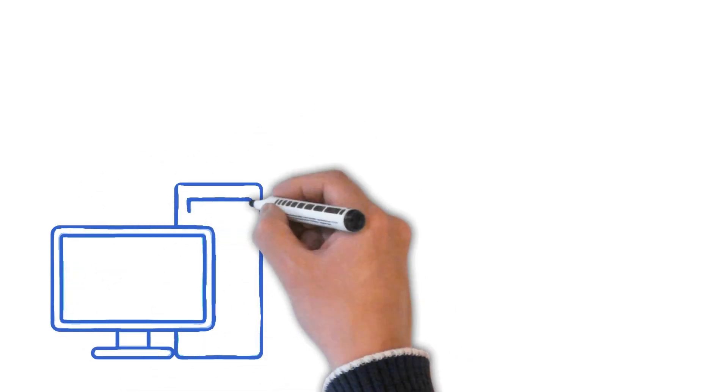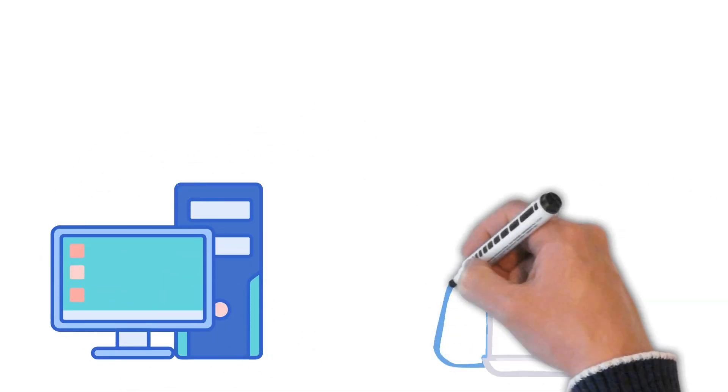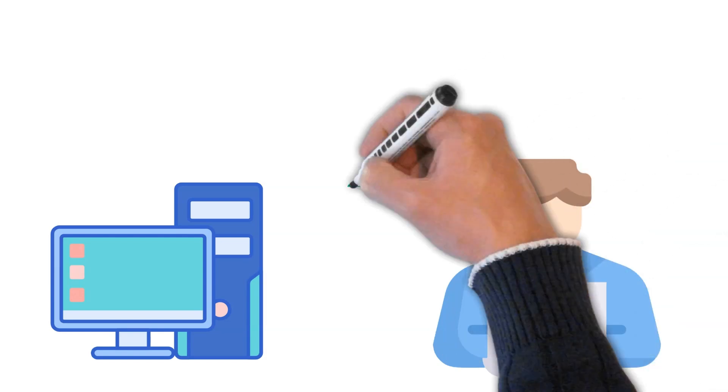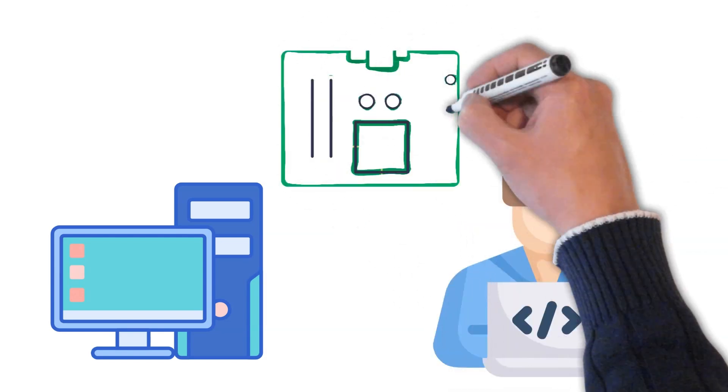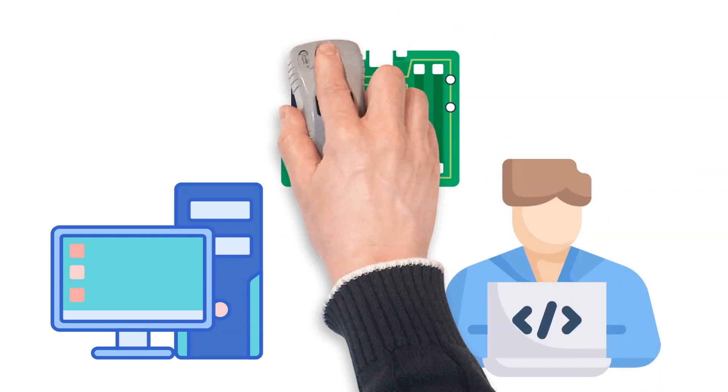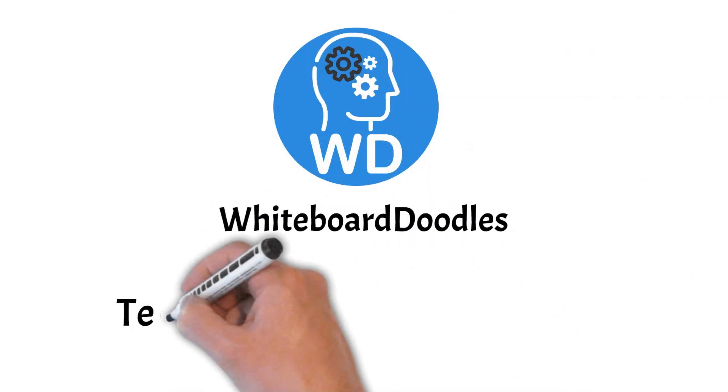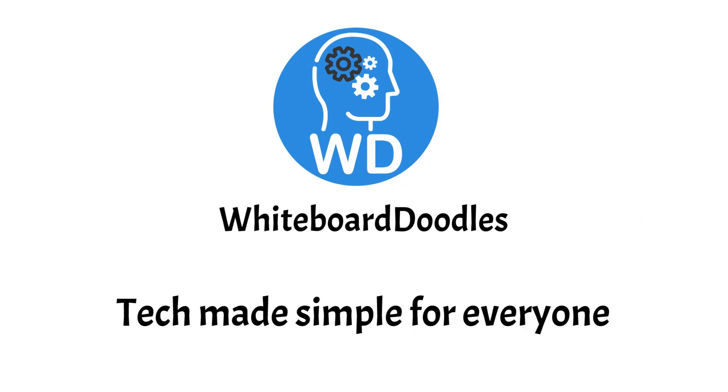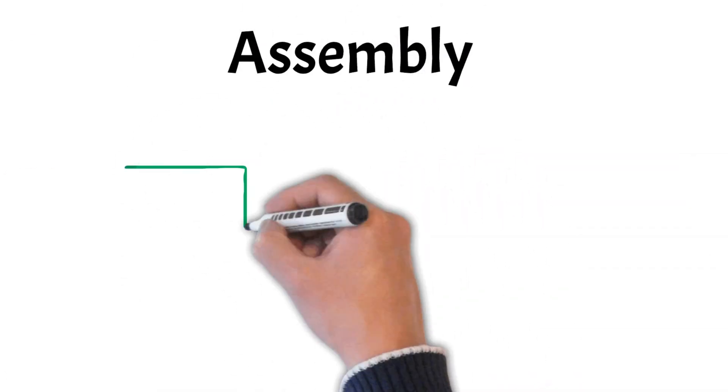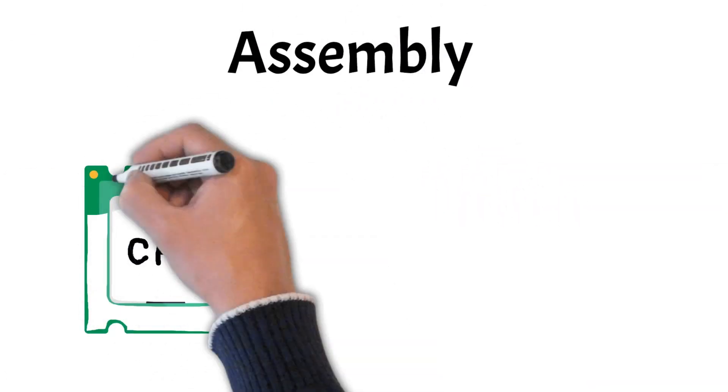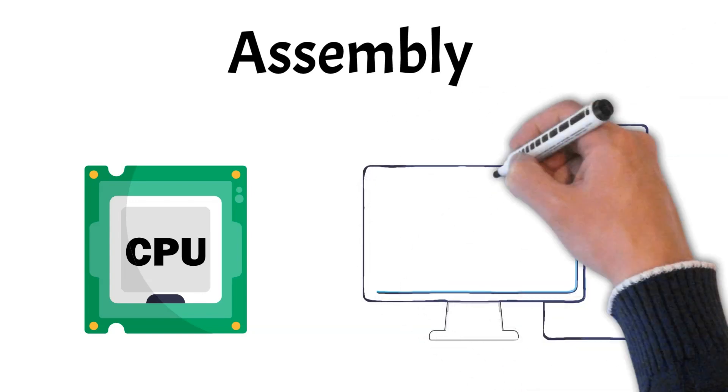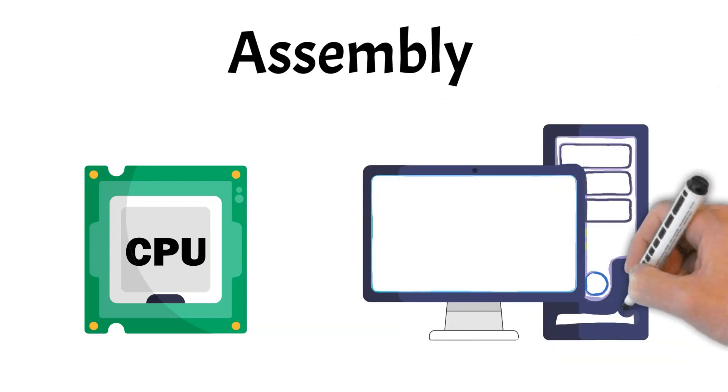Ever wondered how your computer actually understands the code you write? Or how programs run at the lowest level, interacting directly with the hardware? You're in the right place. Welcome to Whiteboard Doodles, the channel where we simplify tech-related concepts using whiteboard animations. Today, we'll explore assembly language, the essential building block for how computers execute instructions at the hardware level. Let's get started.